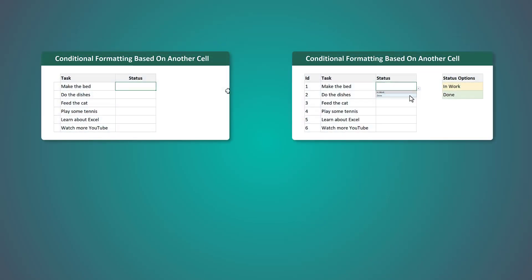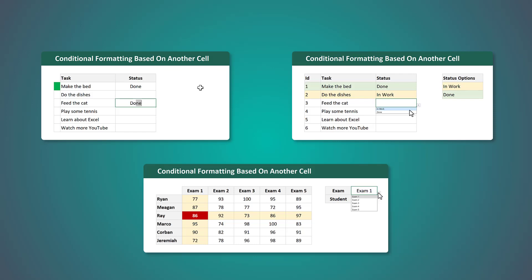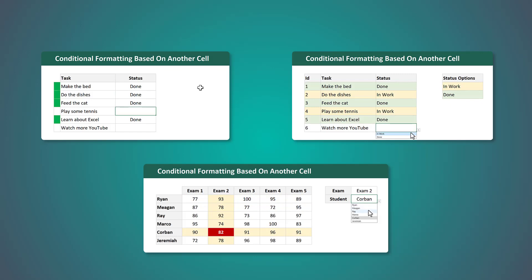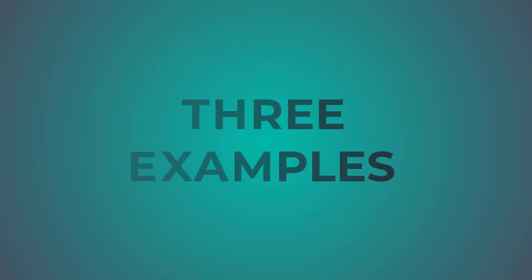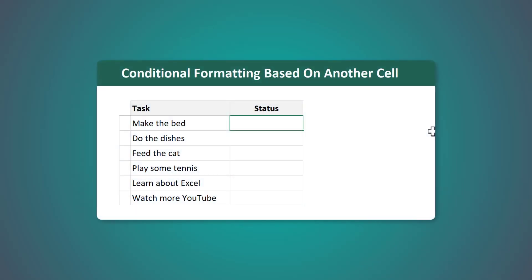In this video I'm going to show you how to write conditional formatting rules that change the formatting of one or many cells based on the value of a different cell. To demonstrate this concept I will cover three examples.